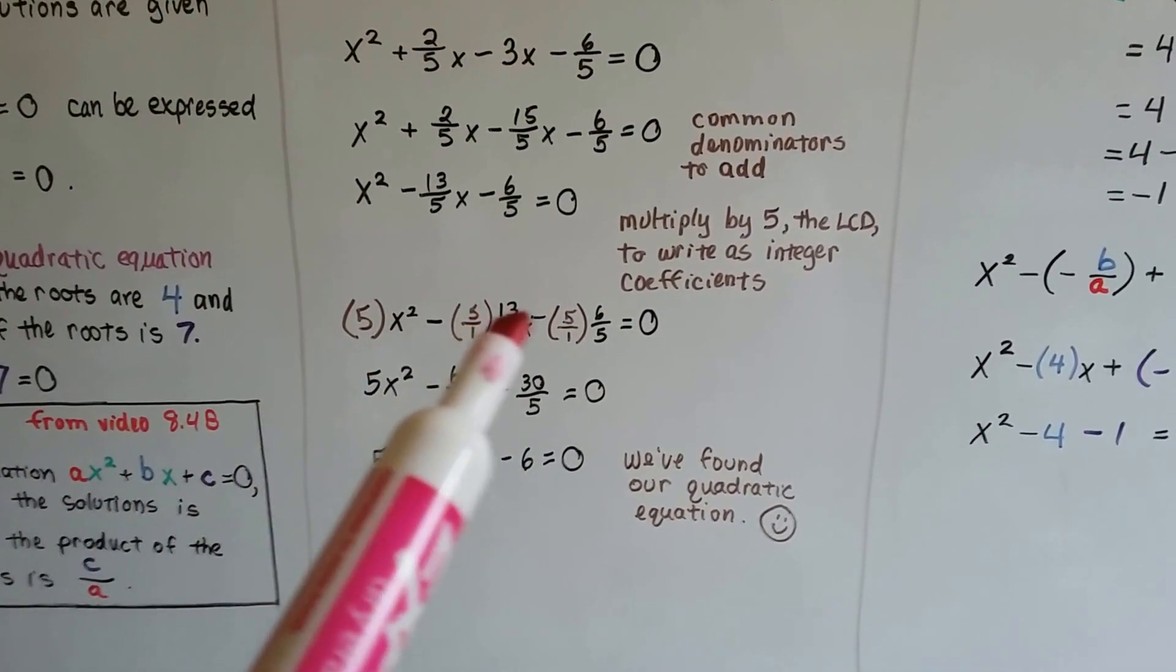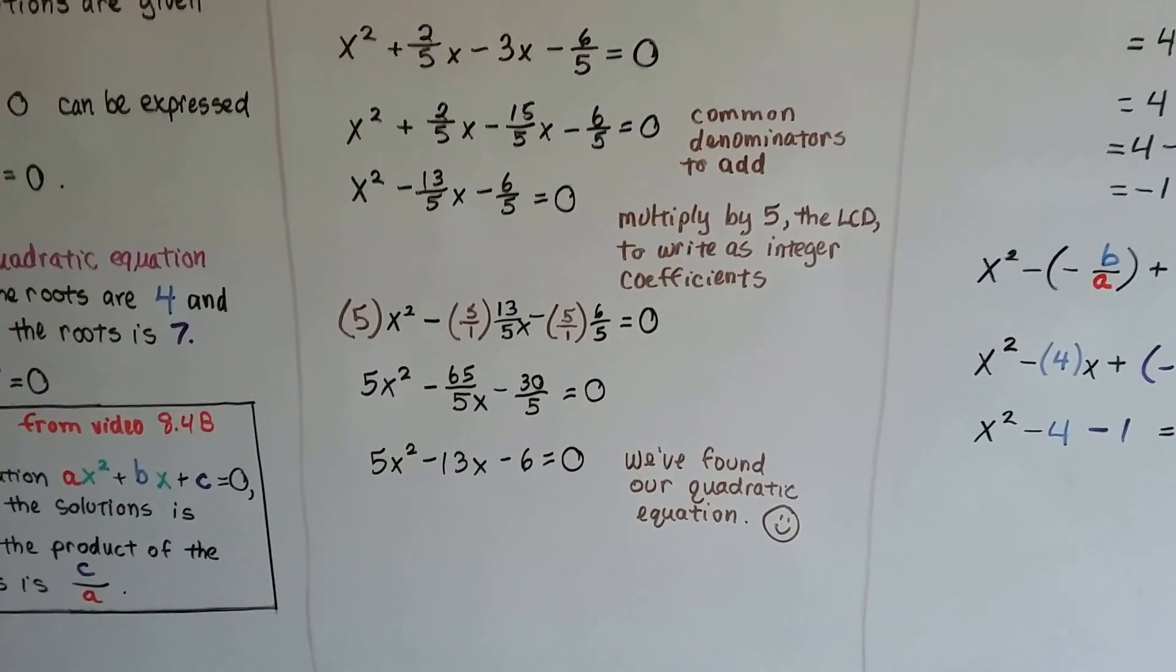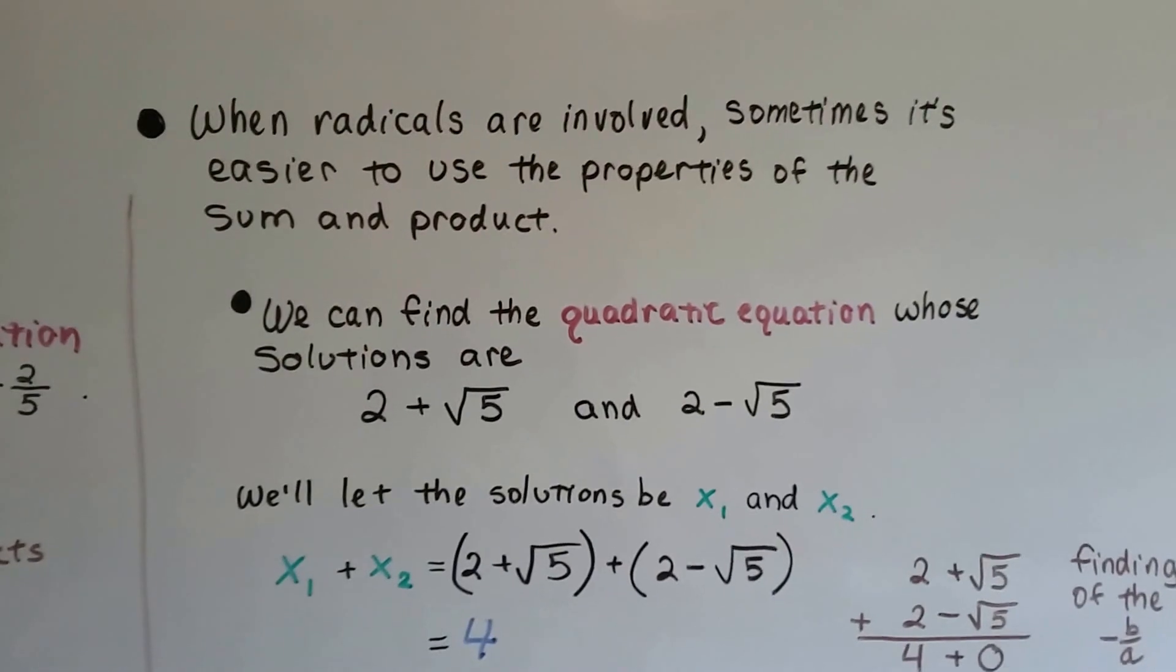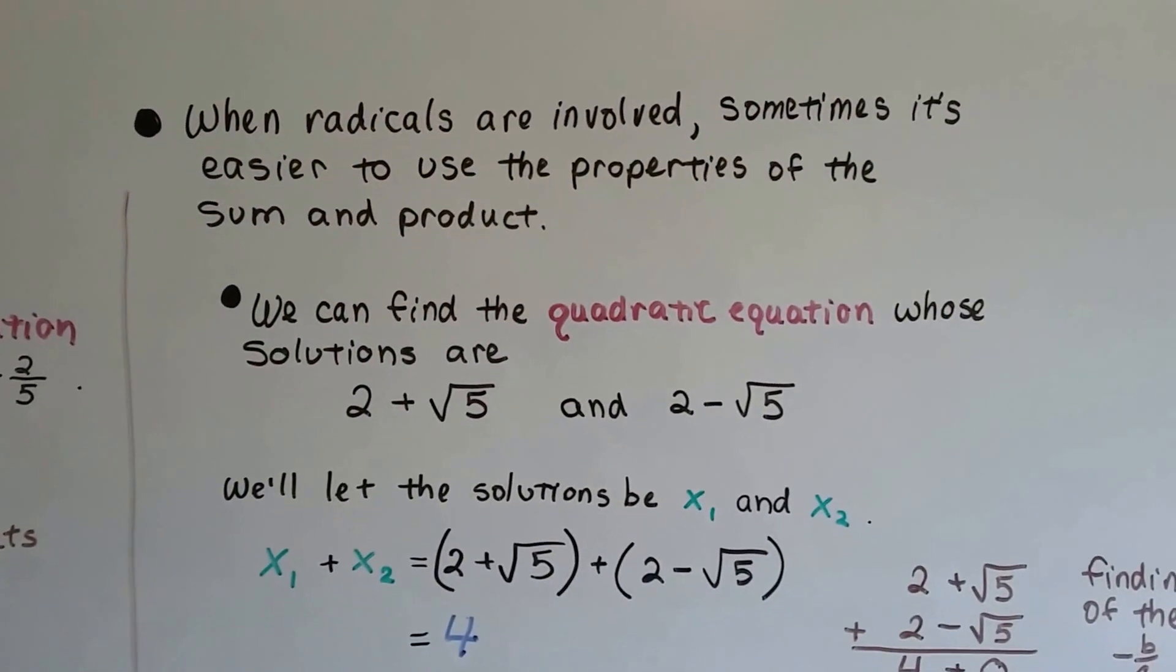Make sure you multiply each term by that LCD. Now, when radicals are involved, sometimes it's easier to use the properties of the sum and the product.